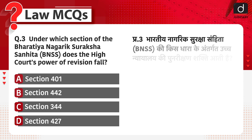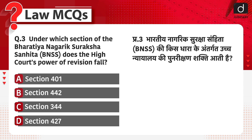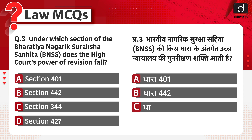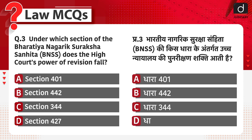भारतीय नागरिक सुरक्षा संहिता की किस धारा के अंतर्गत उच्च न्यायालय की पुनरीक्षण शक्ति आती है? धारा 401, धारा 442, धारा 344 या फिर धारा 427? The correct answer is option B, Section 442. इसका सही जवाब है Option B, धारा 442।